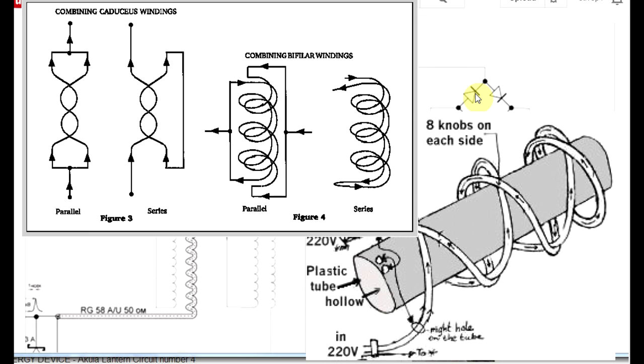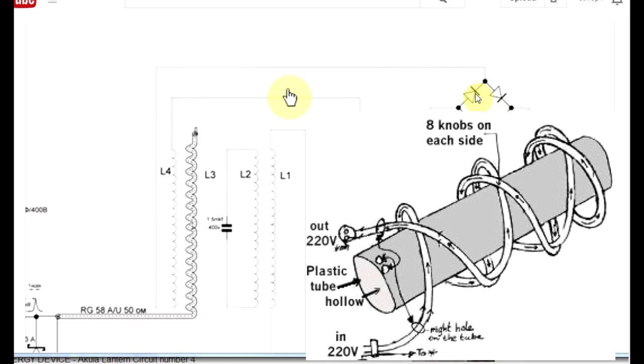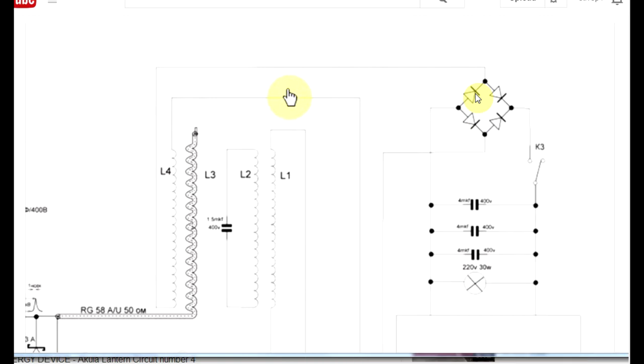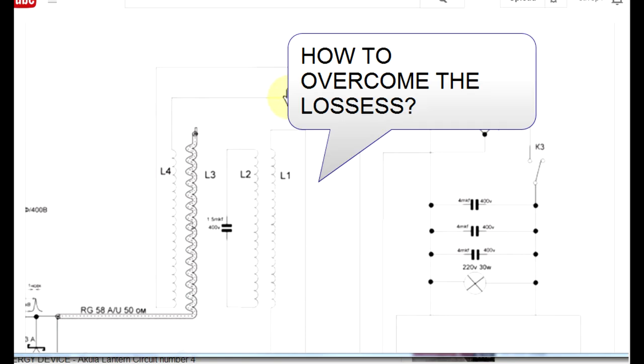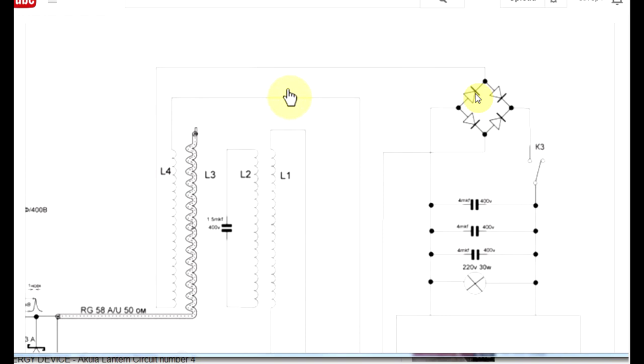But here's the rub: no matter what you build, your coil, your caduceus coil, whatever, has losses. Your source has losses. How do you overcome the loss? The loss is degrading the structure. That's what you have to do, is overcome the losses. It's possible, I don't think so, but maybe there's a way of doing it. There's no secret to that. You have to overcome the losses. Explain how the losses are overcome and you may have a viable system.